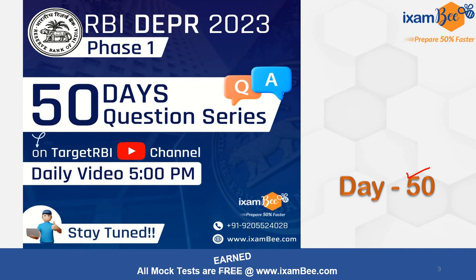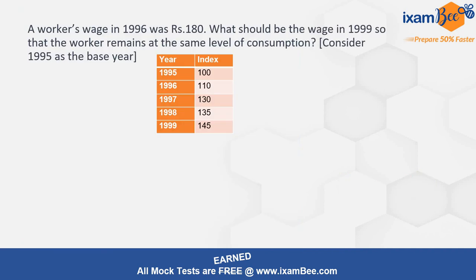The question for today is that a worker's wage, as mentioned in 1996, is rupees 180. What should be the wage in 1999 so that the worker remains at the same level of consumption? You have to consider the price index that is already given for different years. You have to consider 1995 as the base year, so the index is 100 there, and you have to find what the wage would be in 1999 so that he remains at the same level of consumption as he was in 1996.